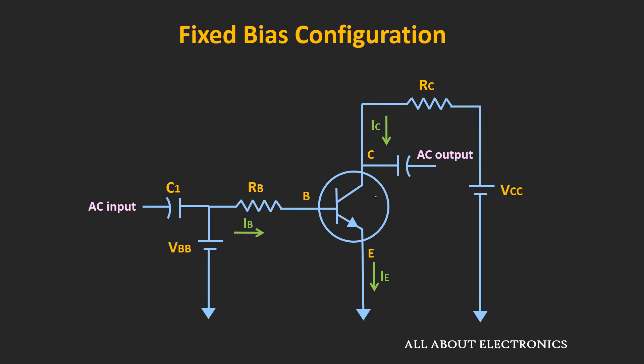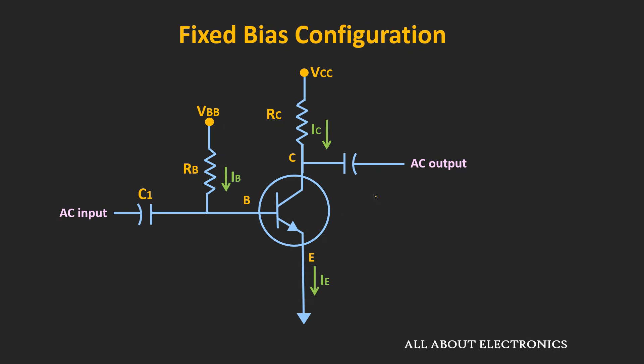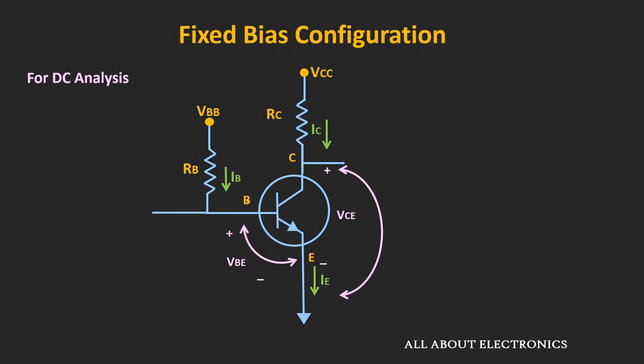This is the circuit of the fixed bias configuration. If we redraw the same circuit, the AC input signal is applied between the base and the emitter terminal, while the output is taken across the collector and emitter terminal. As we are interested in the DC analysis of the circuit, we can replace all the capacitors with an open circuit. The reason it is known as the fixed bias configuration is because for the given power supplies, if we fix the value of the base resistor, then this base current IB will get fixed. The voltage VB is the voltage on the input side, while the voltage VC is the voltage on the output side.